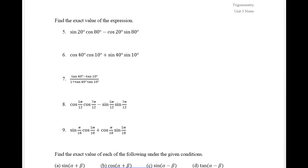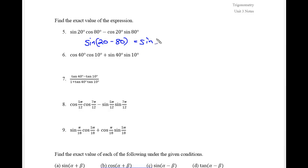In the second part here we see a new style of problem where we start off with the expanded part of the formula and by thinking about whether this is sine, cosine, or tangent we can get the exact value. This is a sine of 20 degrees and 80 degrees, and since the symbol in the middle is a minus, that will be subtraction. We look up on our unit circle for the negative 60 degree angle or the positive 300 degree angle, and using the odd-even formulas we get the exact answer of negative square root of 3 over 2.